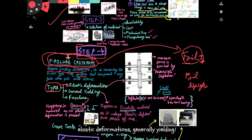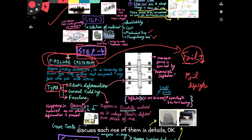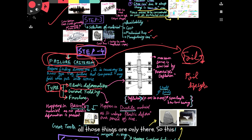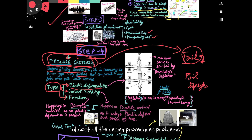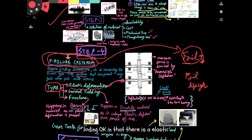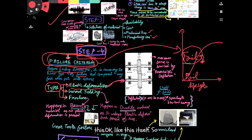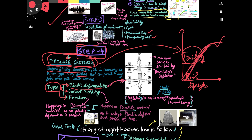The types of failure criteria are elastic deformation, general yielding, and fracture. We're going to discuss each one in detail. Elastic deformation — when a shaft is subjected to loading, there is elastic deformation. You all might know the stress-strain curve. This is the elastic region where Hooke's Law is followed.